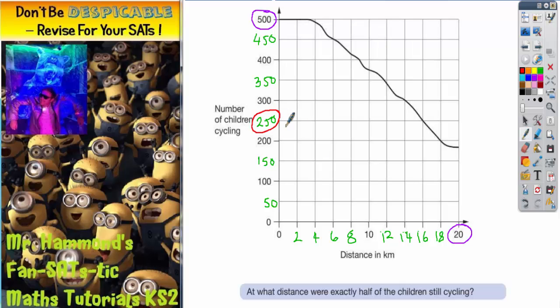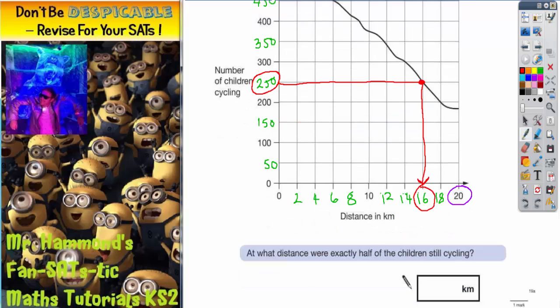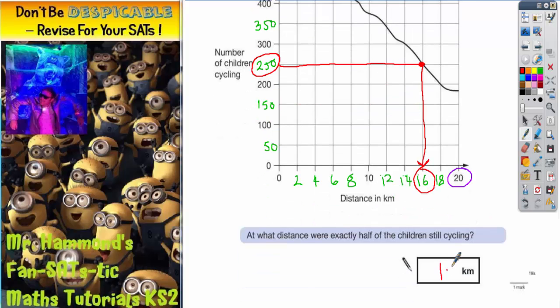And we're going to go along the graph because we need to find the distance. So here is our graph. Our distance will be down here, so let's go down. And we can see that the distance is going to be 16 kilometers. So let's fill that in here, 16 kilometers. So that's the first part of the question done.